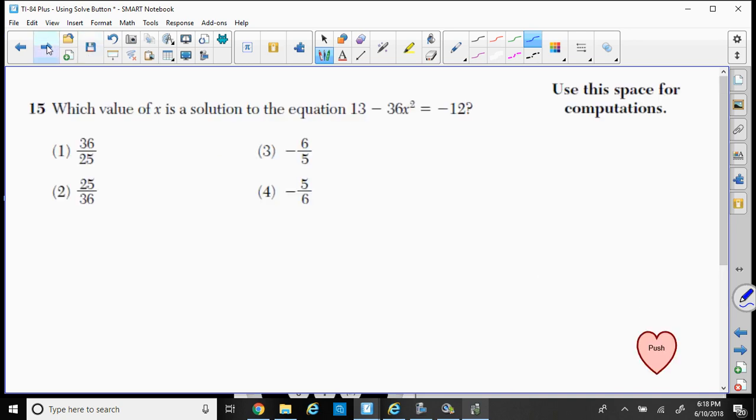Here's another question. Which value of x is the solution to the equation 13 - 36x² = -12? So let's write this down and get this equal to zero. So -36x² equals -12 or minus 12. So I'm going to add 12 to both sides. Add 12 over to here.